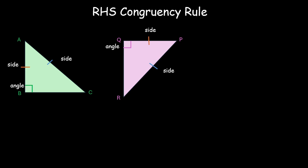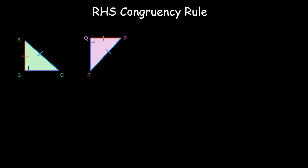Why does RHS work even though it is kind of a form of SSA? So, let us look into it. We, let us take those two triangles again. ABC right angled at B and PQR right angled at Q where AC is equal to PR and AB is equal to PQ.